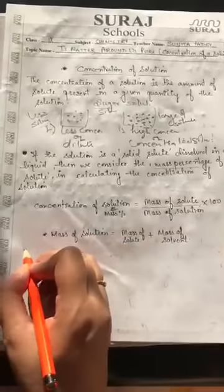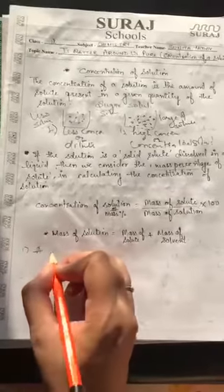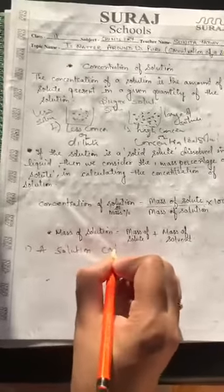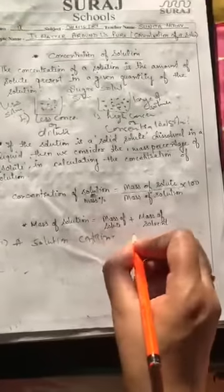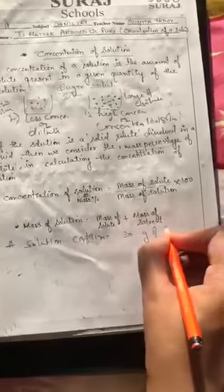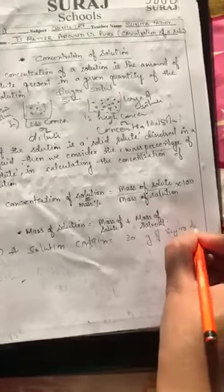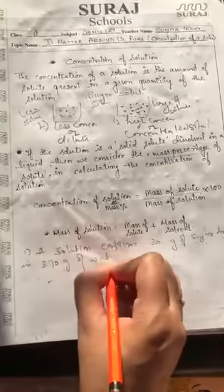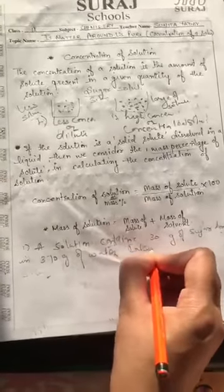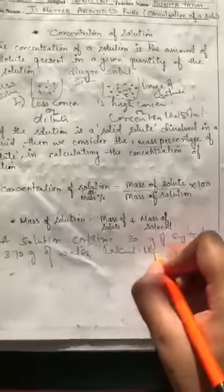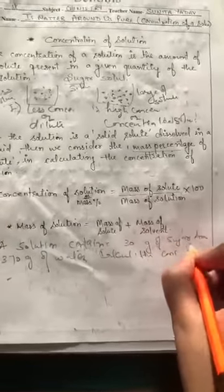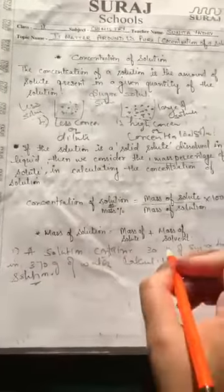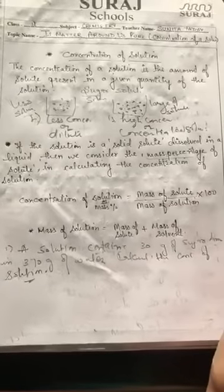For example: a solution contains 30 grams of sugar dissolved in 370 grams of water. Calculate the concentration of solution. First, students, identify which one is the solute and which one is the solvent.